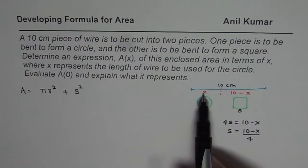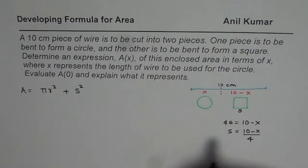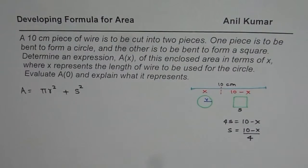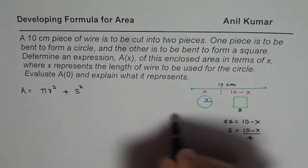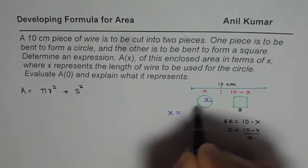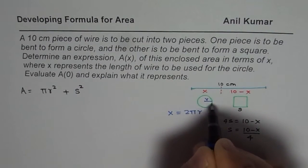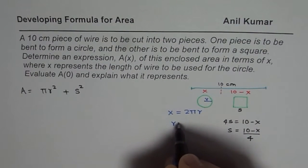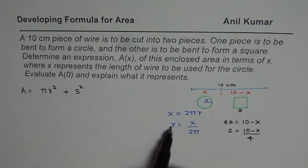We can write this as (10-x)/4 whole square. Now let's see how to develop a relation for radius and the length x. Let us say this is R, the radius. Then from here we can say x equals 2πr, the circumference. So the whole length goes into that circular shape. Now from here we can write R equals x divided by 2π. So that is how we can relate R with x.